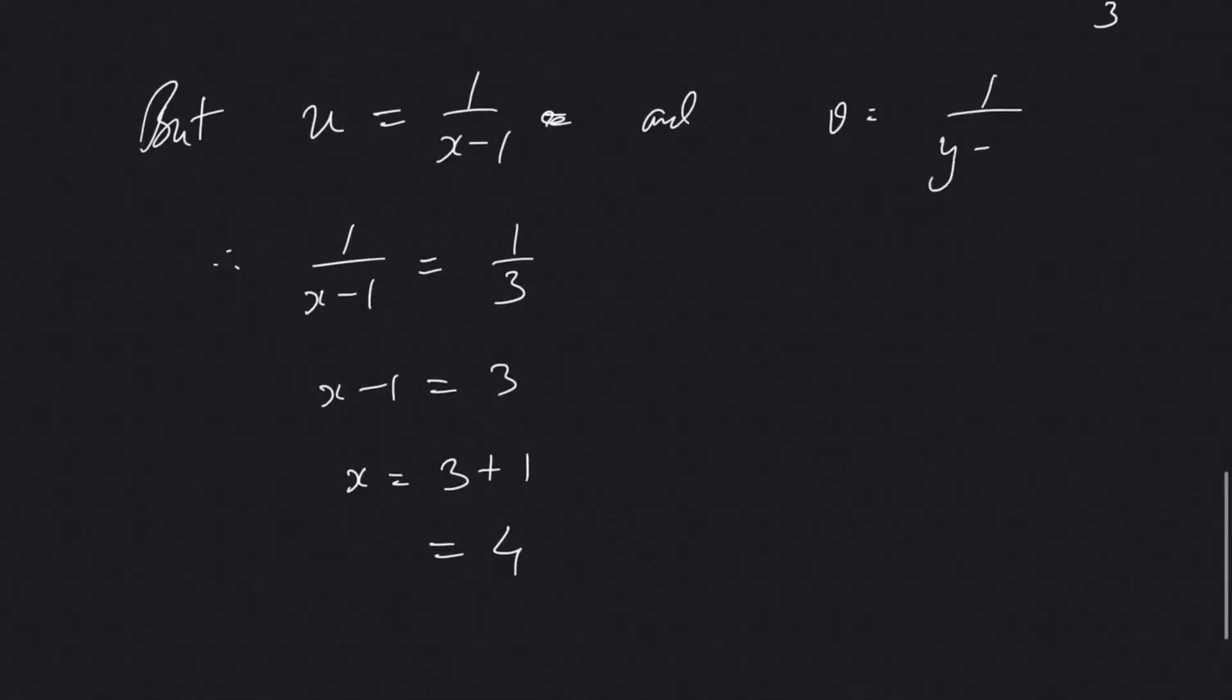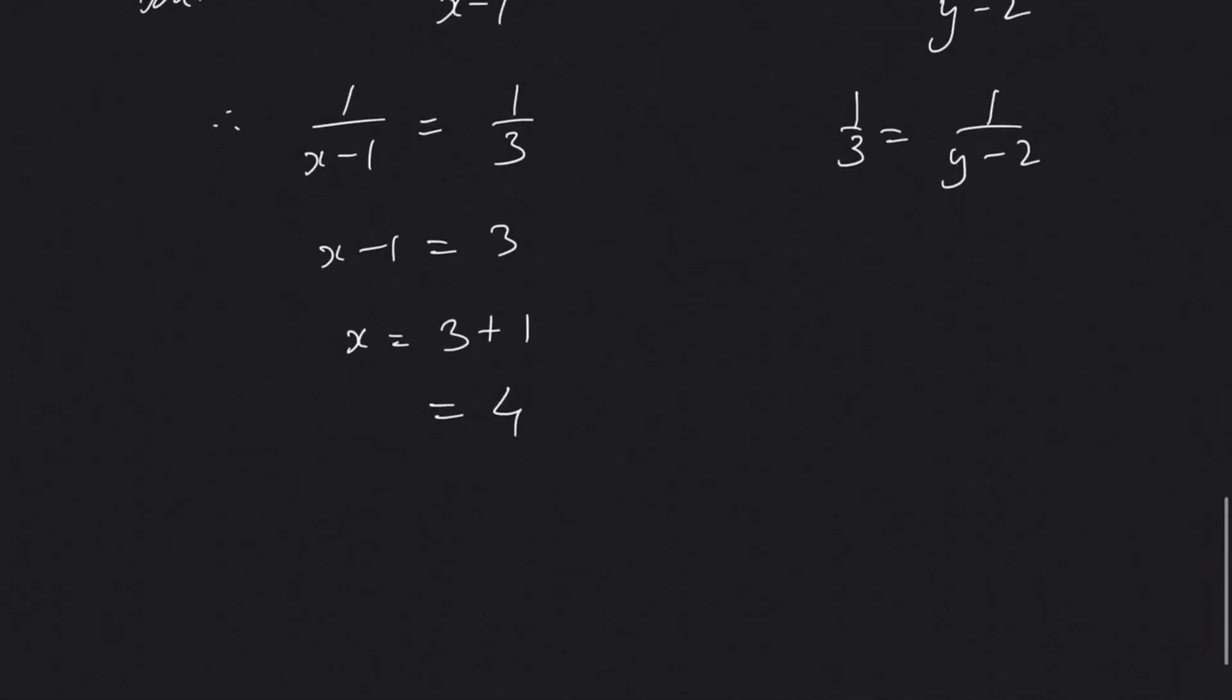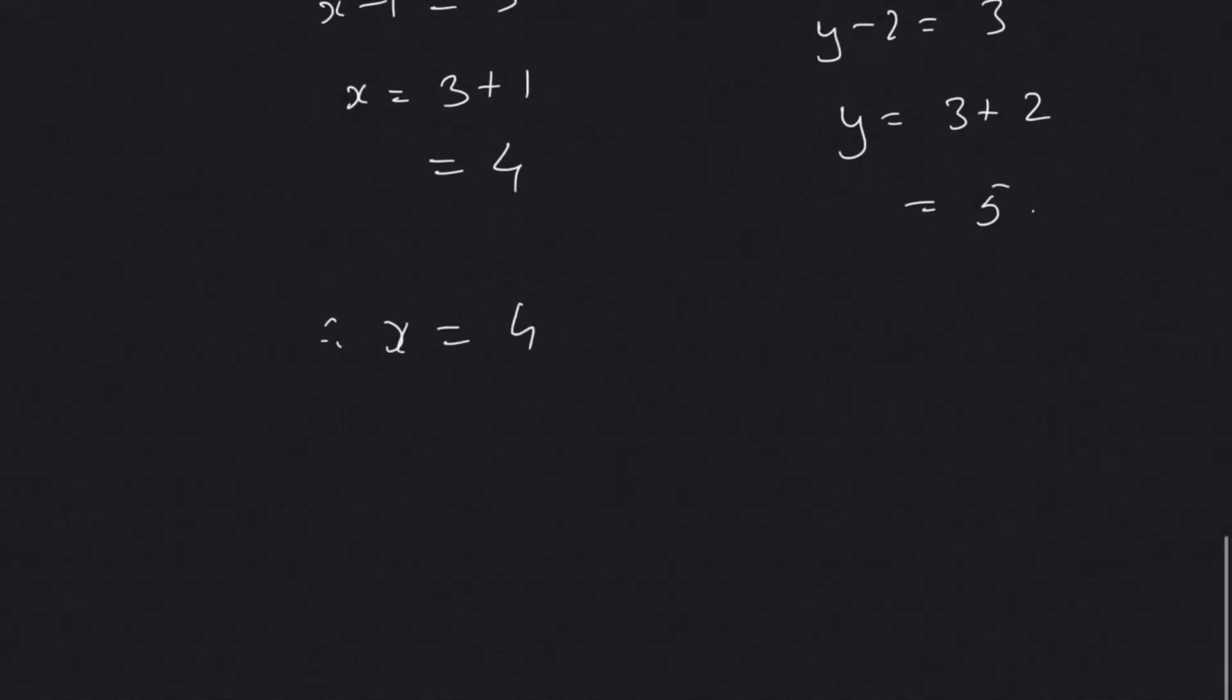And v as 1 by y minus 2, so v value we got 1 by 3 equal to 1 by y minus 2. Cross multiplying, y minus 2 equal to 3, y equal to 3 plus 2, that will be equal to 5.